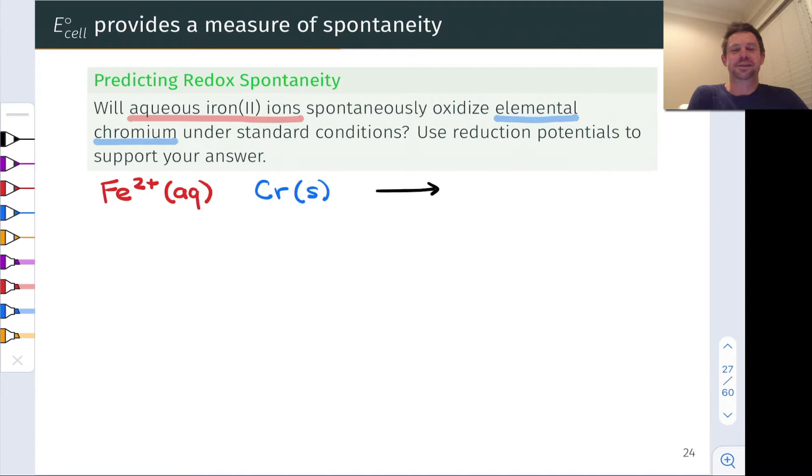One of the reasons I love this question is it says nothing about what the products of the reaction might be. And chromium, in particular, and iron actually, have access to multiple oxidation states. So we're not even sure what the products would be.